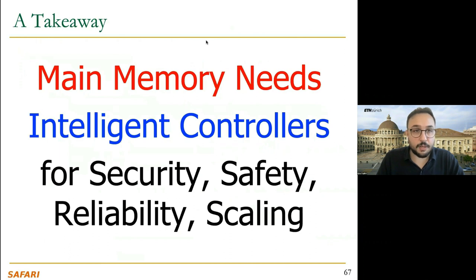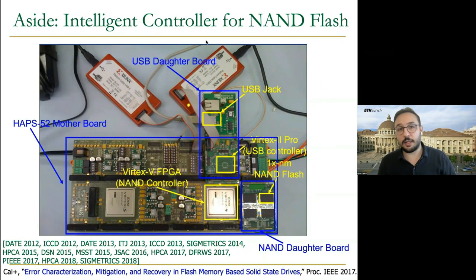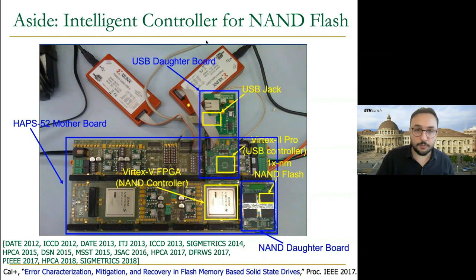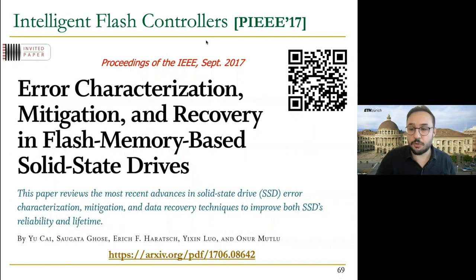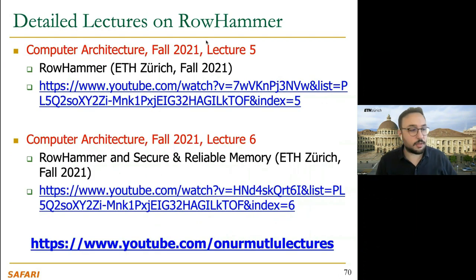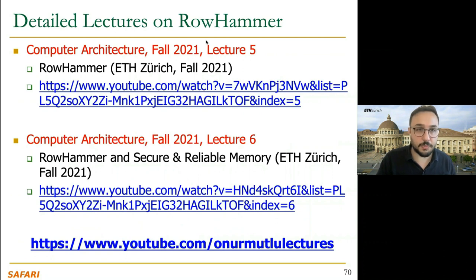The key takeaway of the flipping bits paper is that main memory needs intelligent controllers for security, safety, reliability, and scaling. We already have intelligent controllers designed for NAND flash, and we have many examples of different intelligent flash controllers. We need similar controllers for addressing DRAM scalability problems as well.